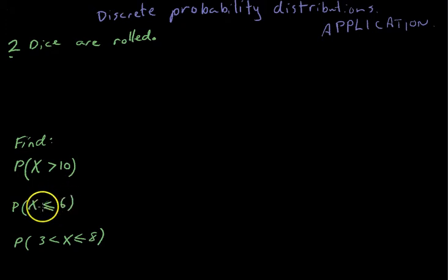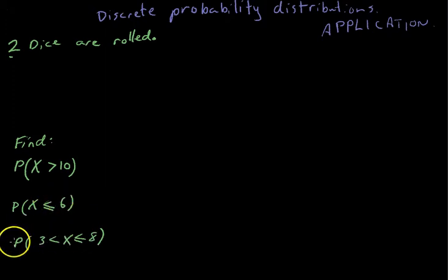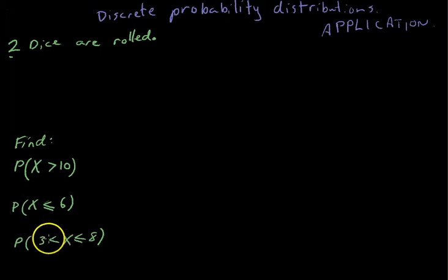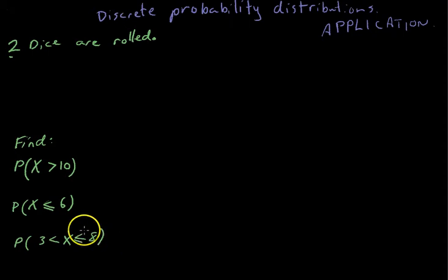So x less than or equal to 6 means 1, 2, 3, 4, 5, or 6. And then finally, this is sort of the harder one: find the probability that 3 is less than x, which is less than or equal to 8. In other words, the number is between 3 — well, it can't be 3 — so 4, 5, 6, 7, or 8. That's the question we're being asked.